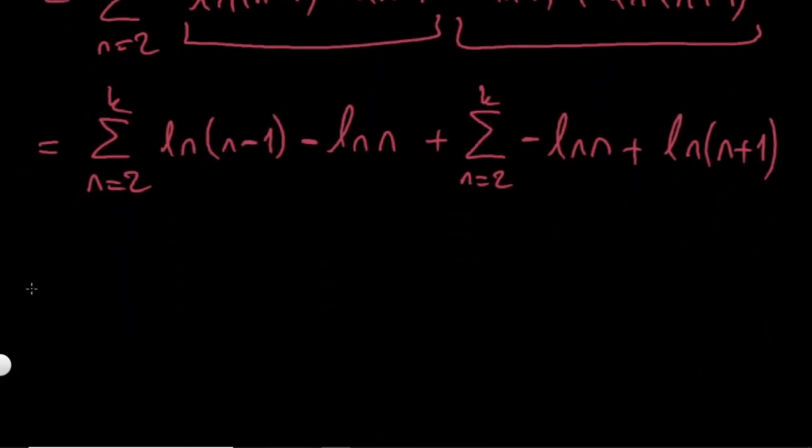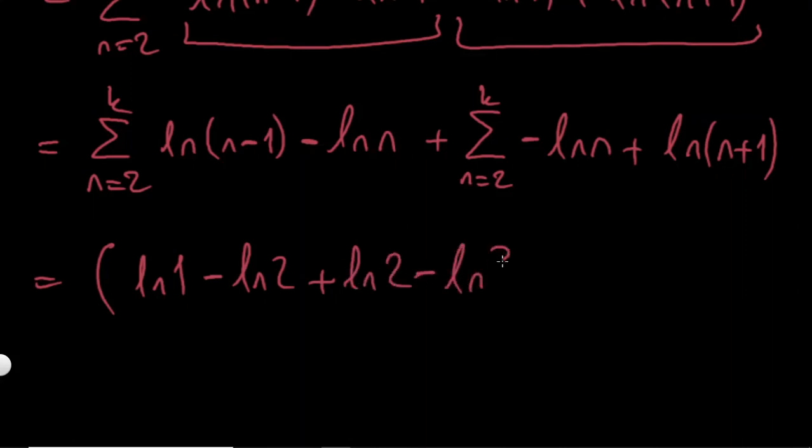And now, let's open all terms. I'm first writing this first sum in this parenthesis. If I put n is equal to 2, this will be ln 1 minus ln 2. If I put 3, this will be plus ln 2 minus ln 3. And if you notice, all of these terms are gonna go. In the end, the next term is gonna be ln 3 minus ln 4. So, this ln 3 will also go. This will go plus minus.